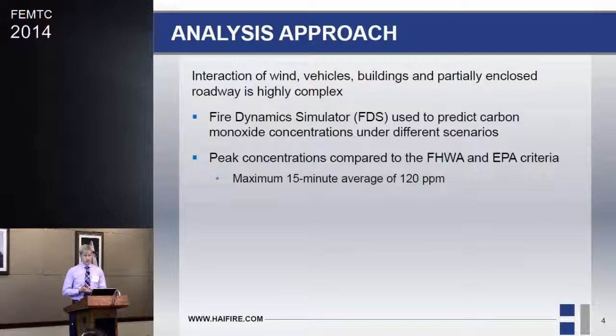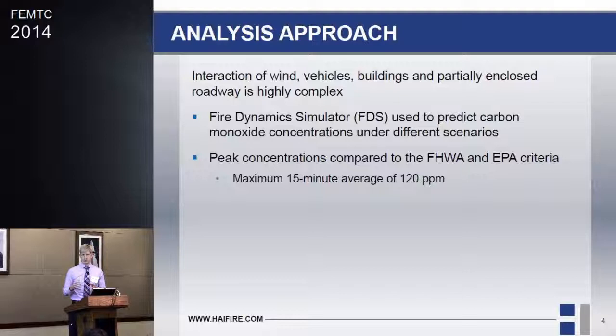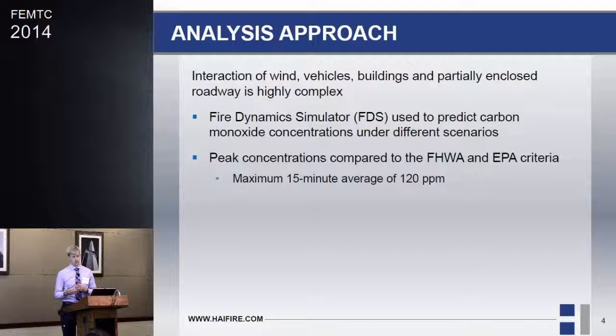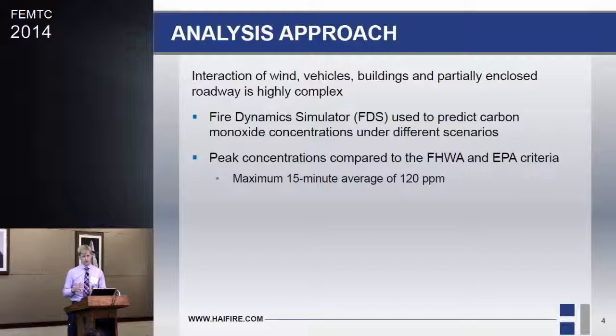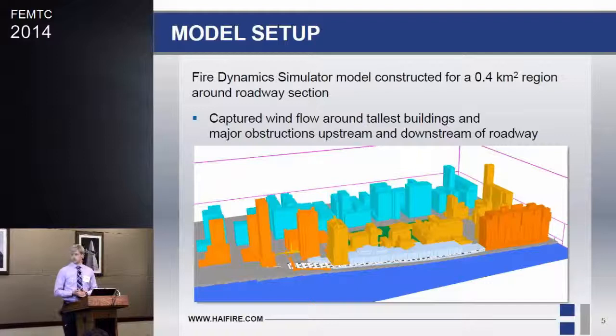Due to the high complexity of the interaction — several hundred cars each putting out carbon monoxide, wind from different directions, and the large urban area with buildings in all directions — we used FDS to predict carbon monoxide buildup, identify areas of concentration, and compare to EPA criteria over a 15-minute average. The obvious solution would be to install an exhaust system to blow through the enclosed roadway and clear out the CO, but they wanted to know whether they actually needed that, and if so what flow rate would be required.